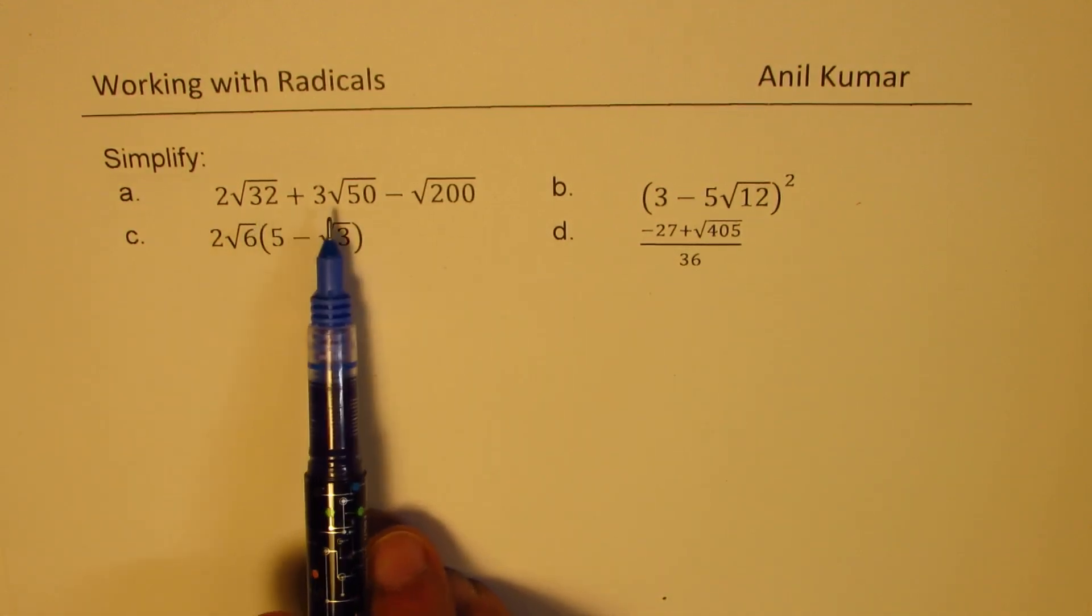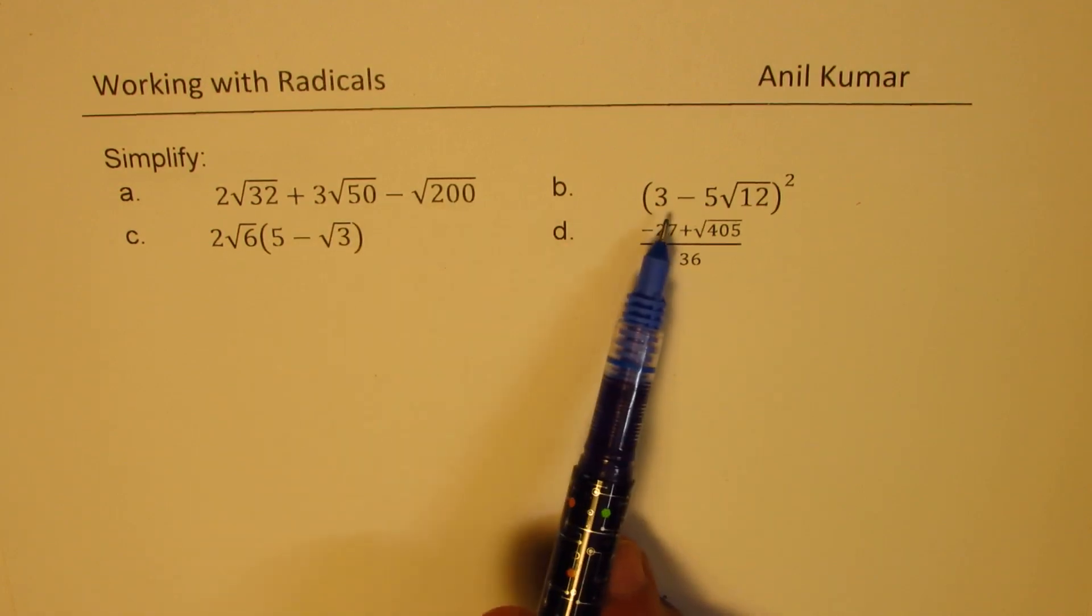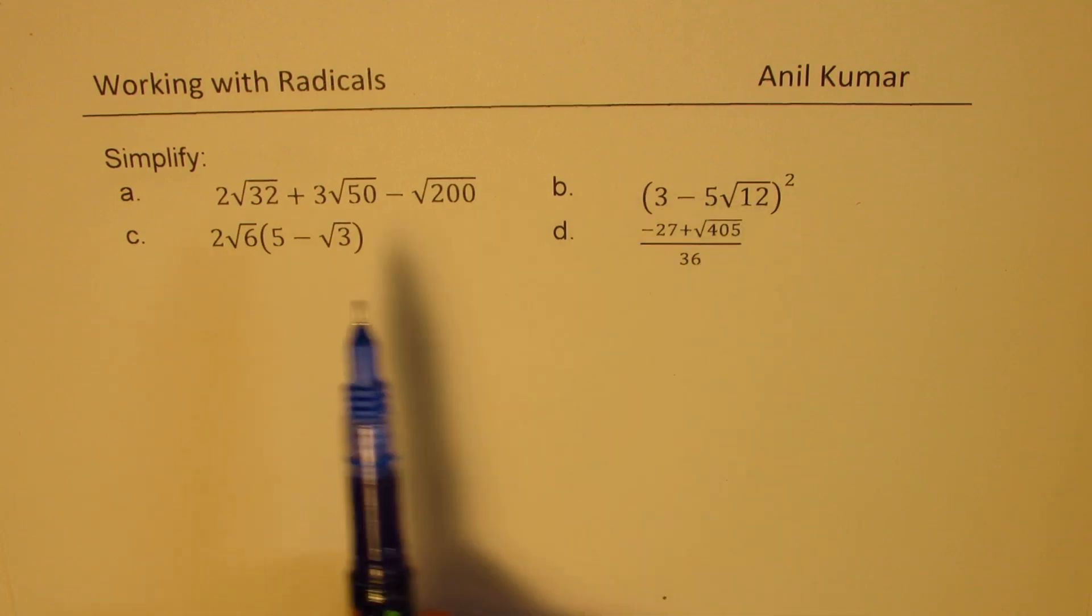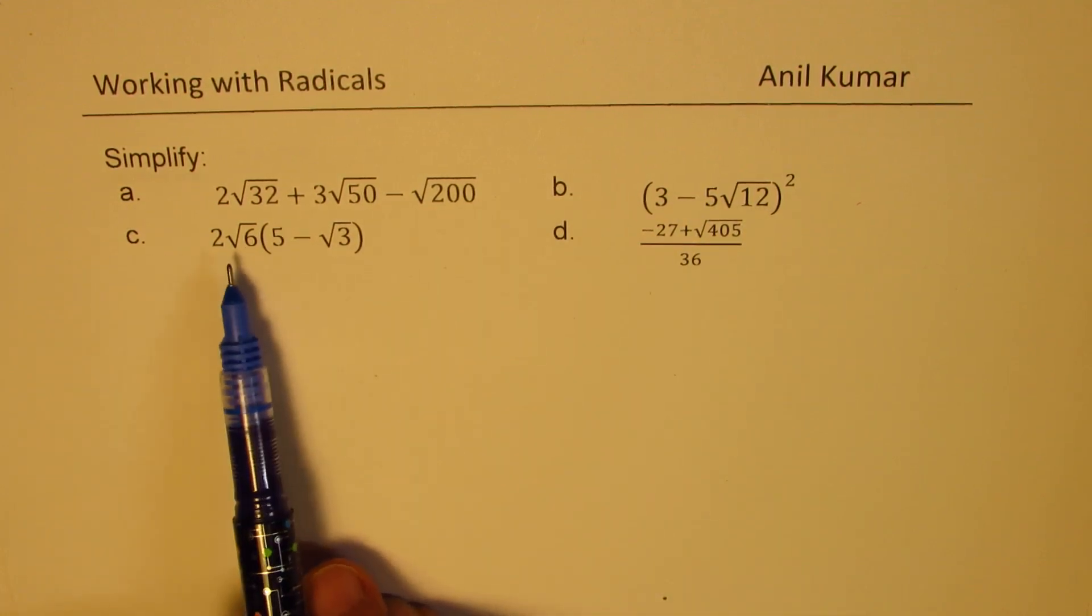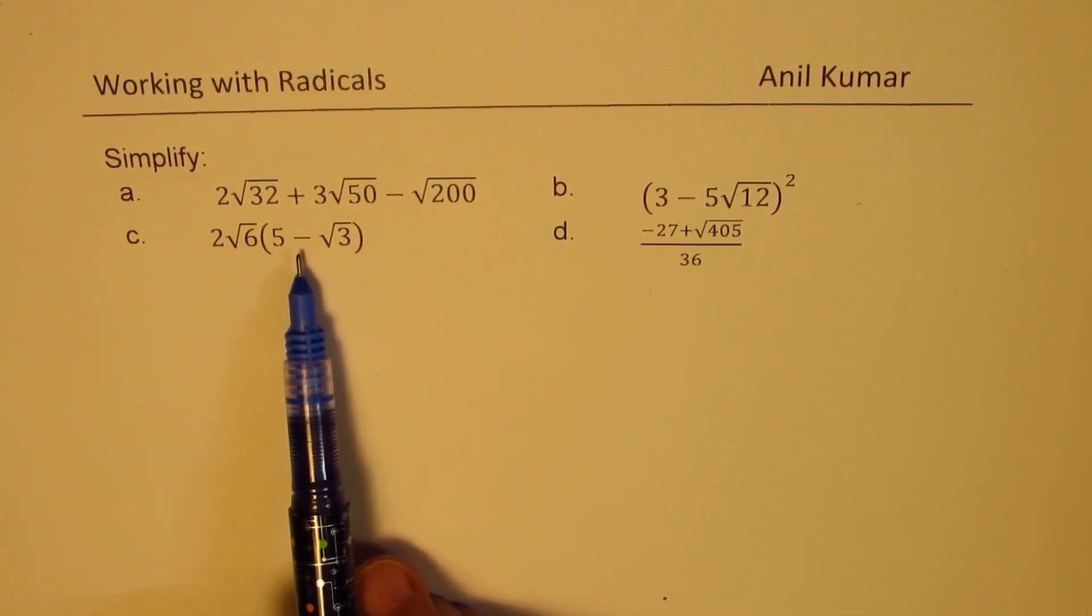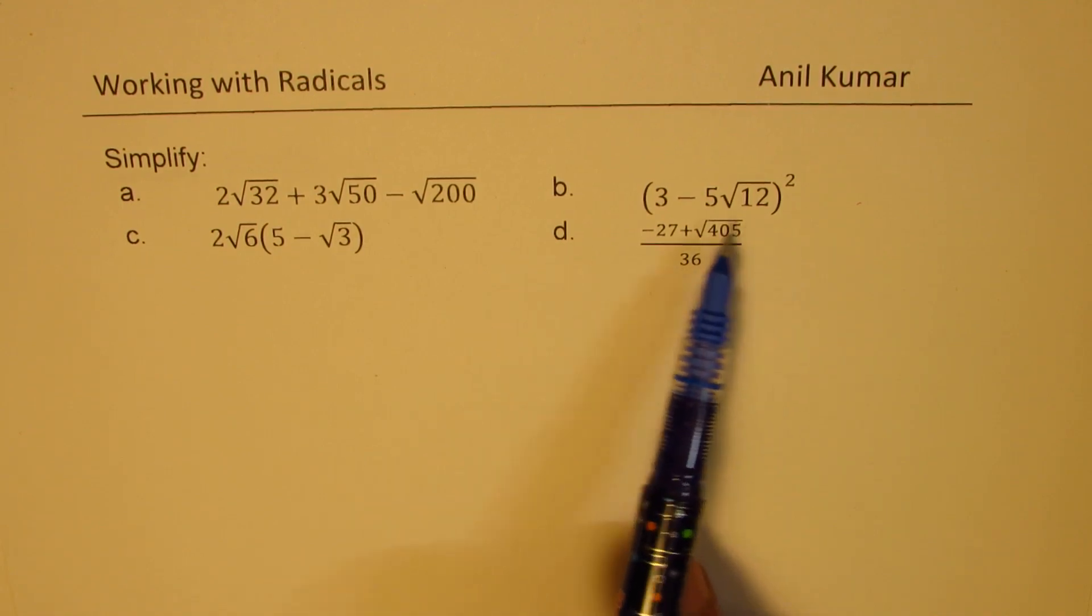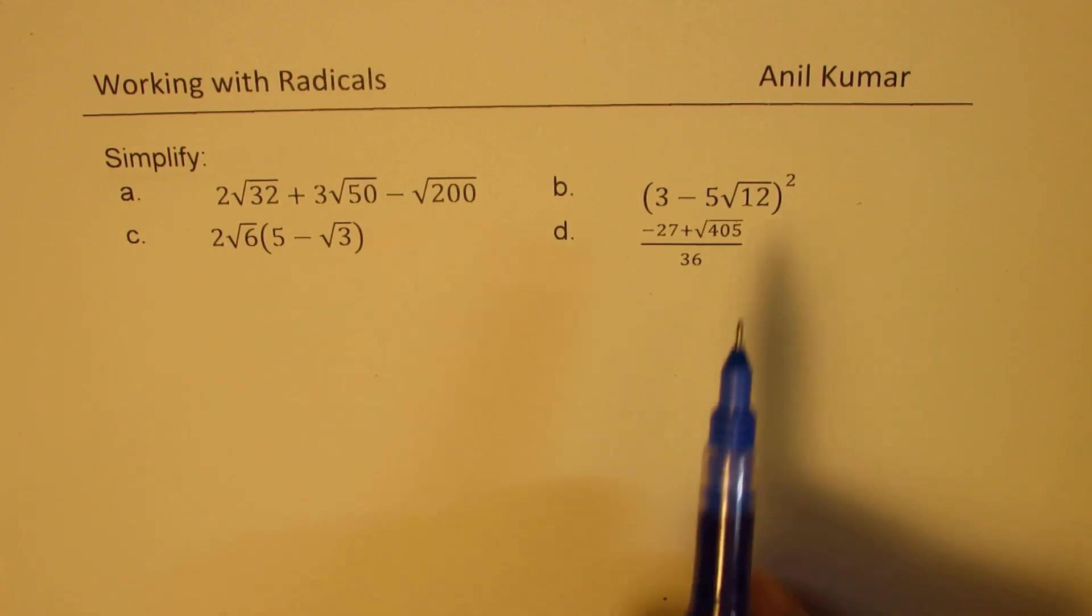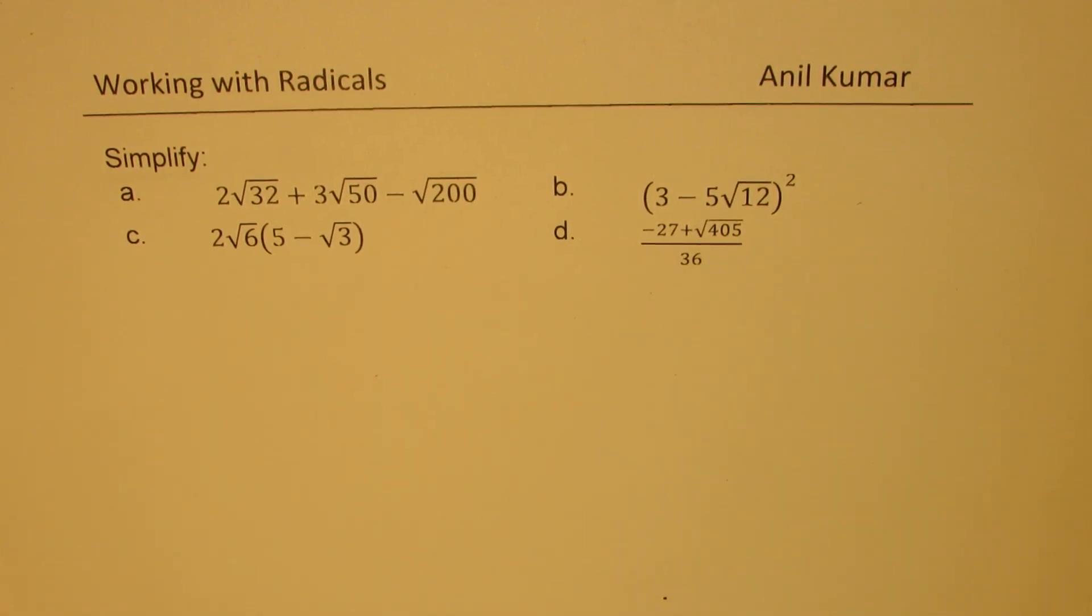In one, we are adding the radicals. In the second, we're trying to multiply them, expanding. In the third, we are applying the distributive property. And in the fourth, we have a function which is very familiar to those who are doing solutions to quadratic equations. We'll see how to simplify this and then write the answer.